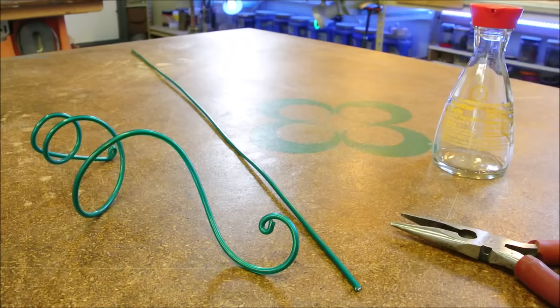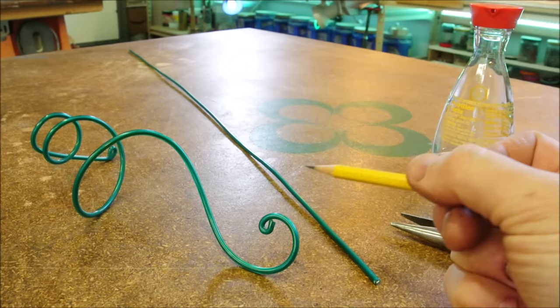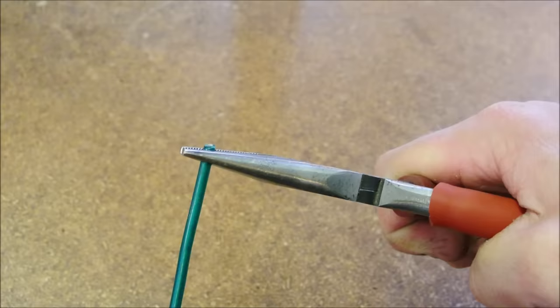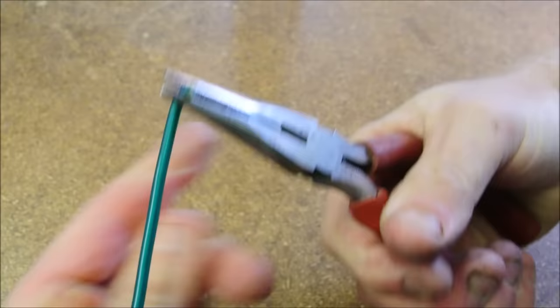When you're working with wire, you should keep in mind just how dangerous the ends of wire can be. At the first opportunity, I try to put a P-shaped bend into the end just to make it safer. This is easy enough. We just grab right around here, about this far away from the end, and we just roll it back on itself.